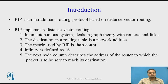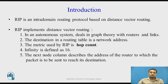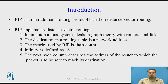The first consideration is within an autonomous system. RIP deals in graph theory with routers representing the nodes and arcs representing the links. The destination network in the routing table is a network address. The metric used by RIP is hop count. Infinity is redefined as 16. The next-hop column of the routing table describes the address of the router to which the packet is to be sent so that it reaches its destination.